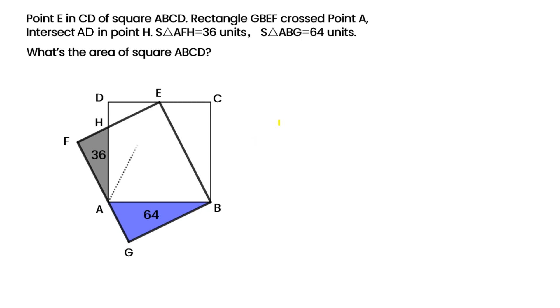Let's connect AE. Obviously in square ABCD, we can get area of triangle ABE is one half of square ABCD. In rectangle GBEF, area of triangle ABE is also equal to one half of rectangle GBEF.